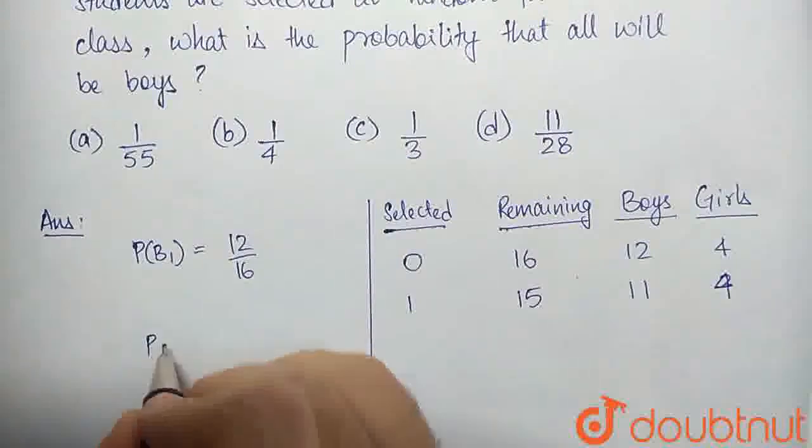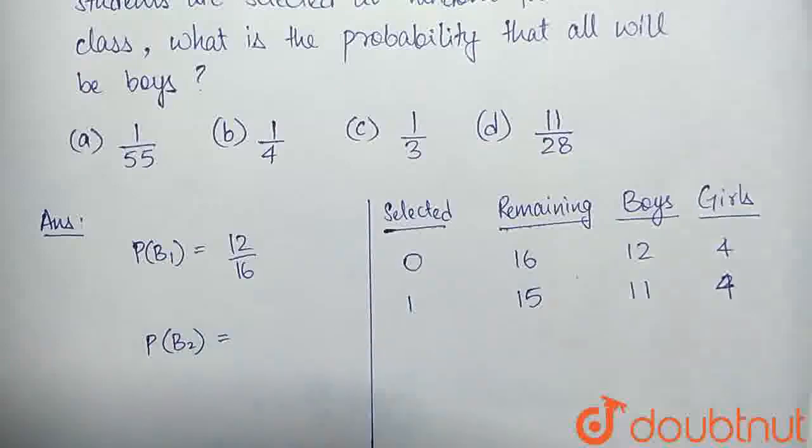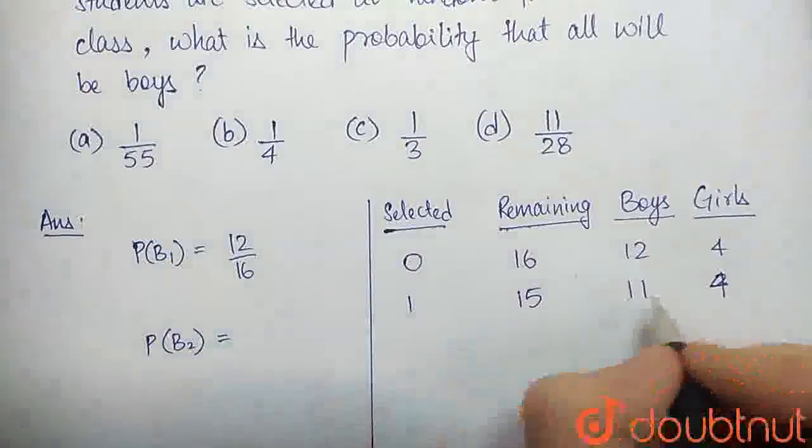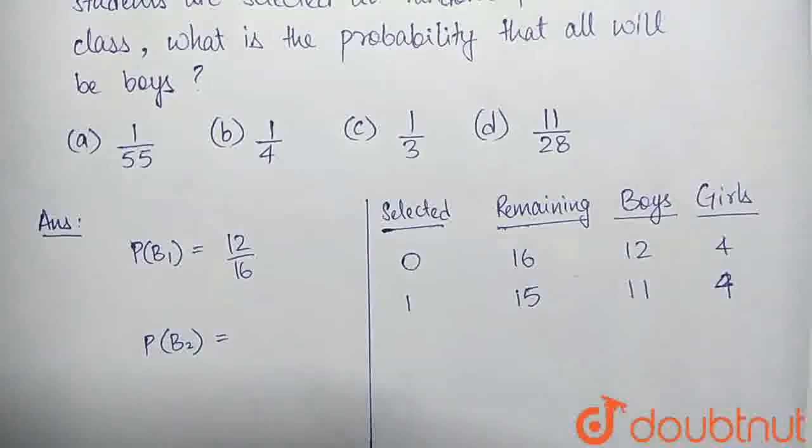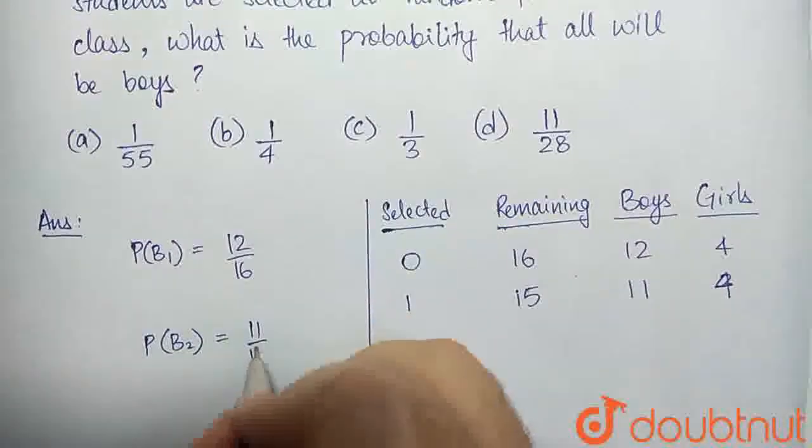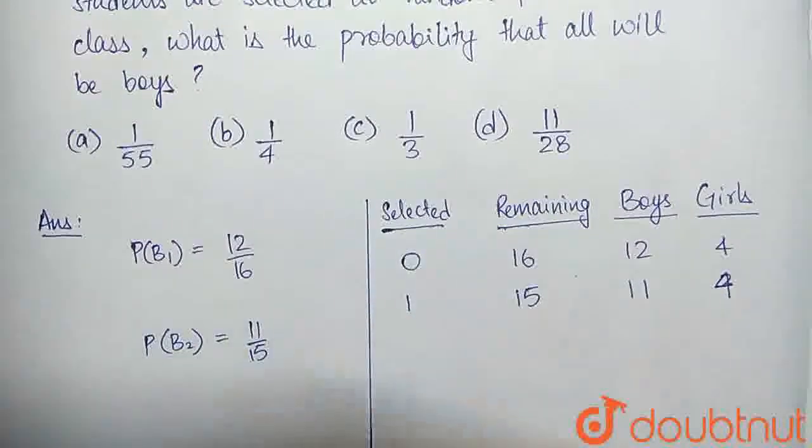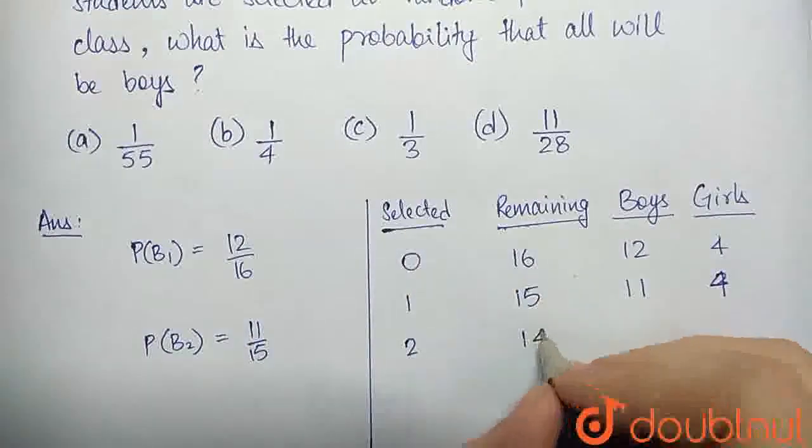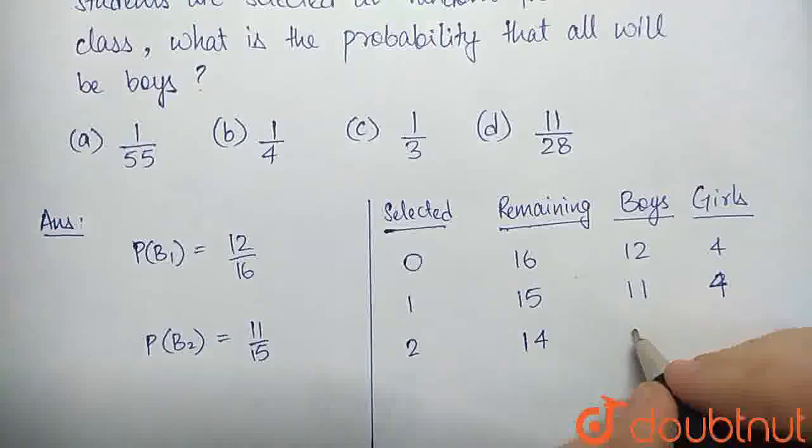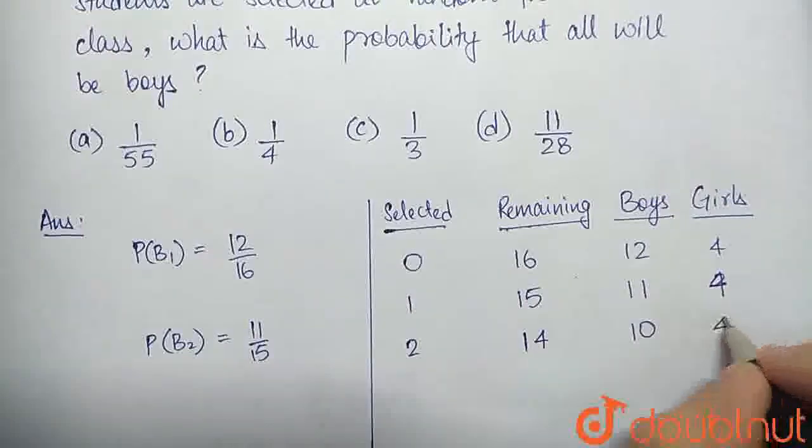Now, the second time we select a student, we want the second one to be a boy as well. So the second time, the probability will now be 11 boys of 15 students, so 11 by 15. We have selected the second student, now there are 14 students remaining, of which 10 are boys and 4 are girls.